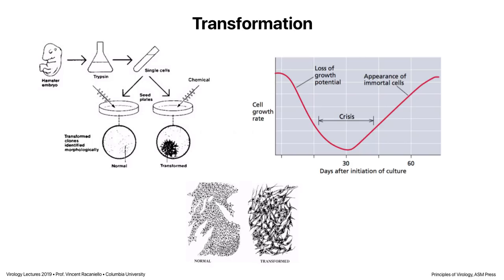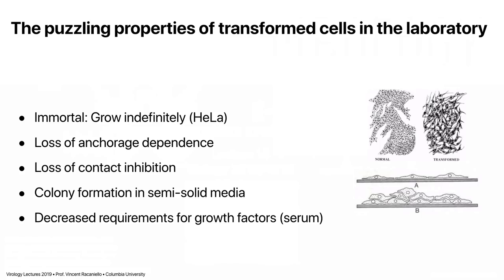You could accelerate this process by taking these cells from the hamster and treating them with something that would induce mutations — a chemical mutagen or ultraviolet light. When you plate them out, you'll see immediately some cells growing out into what we call transformed foci. You can accelerate this crisis period by mutagenesis. What's happened in both cases is that the cells have sustained mutations in their genome, either spontaneously or by treating them with a mutagen. Those mutations make the cells live forever — immortal. We call them transformed cells, and the process is called transformation.